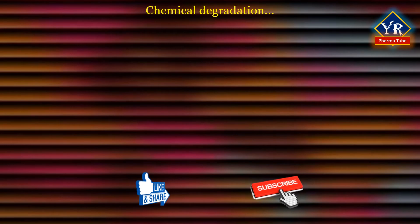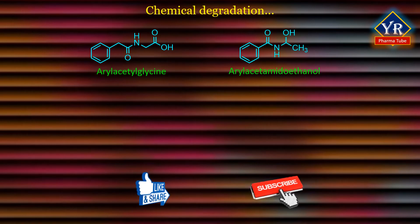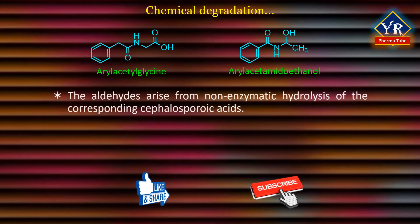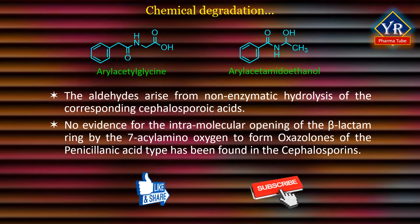Studies of the in vivo metabolism of orally-administered cephalosporins have demonstrated arylacetylglycines and arylacetamidoethanols, which are believed to be formed from the corresponding arylacetylaminoacetaldehydes by metabolic oxidation and reduction respectively. The aldehydes arise from non-enzymatic hydrolysis of the corresponding cephalosporoic acids. No evidence for the intramolecular opening of the beta-lactam ring by the 7-acylamino-oxygen to form oxazolones of the penicillanic acid type has been found in the cephalosporins.